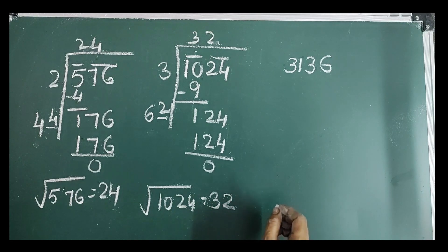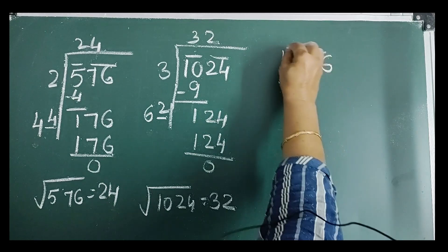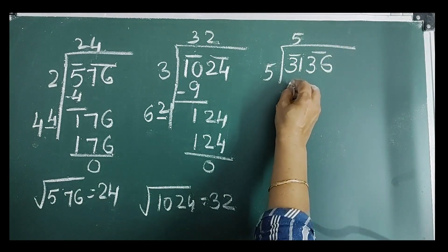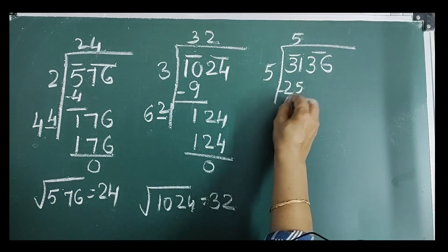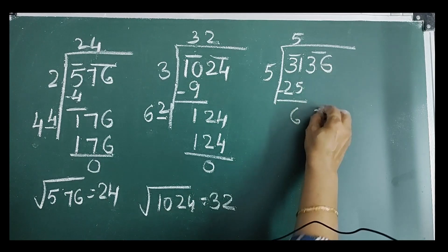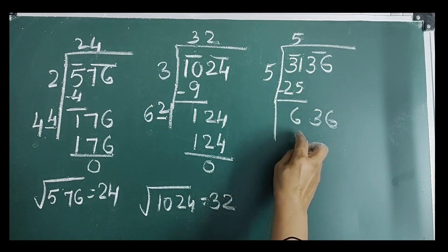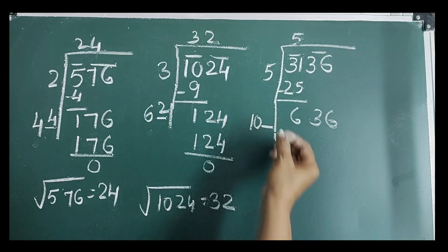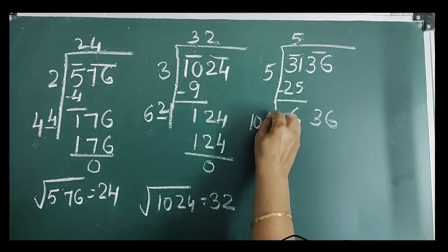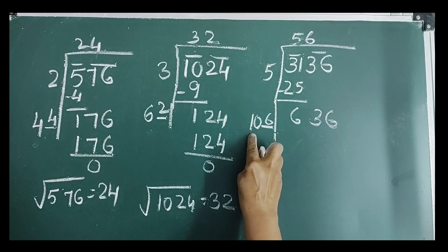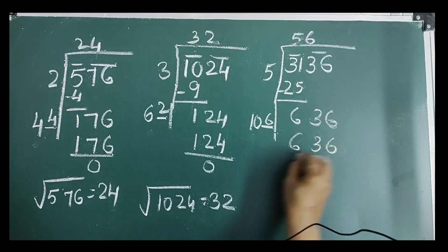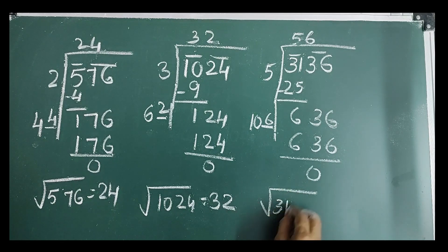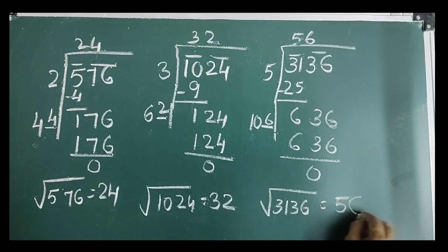Next number is 3,136. Putting bars, 5 times 5 is 25, remainder is 6. Bring down next bar, new dividend is 636. Double the quotient to get 10 with a blank. Guess digit 6, quotient also 6. 6 into 106 is 636, remainder is 0. Therefore, square root of 3,136 is equal to 56.